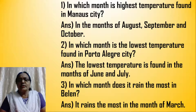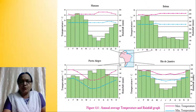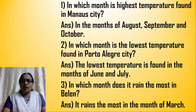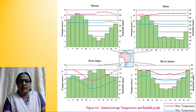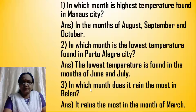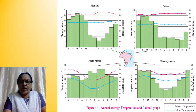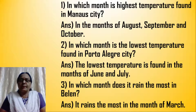In which month is the lowest temperature found in Porto Alegre city? Come back to Porto Alegre — there is a drastic change in maximum and minimum temperatures. For the lowest temperature, you look at the minimum temperature experienced by Porto Alegre. The lowest temperature is experienced in the month of June, and slightly also July. In Porto Alegre, the lowest temperature is found in the months of June and July.